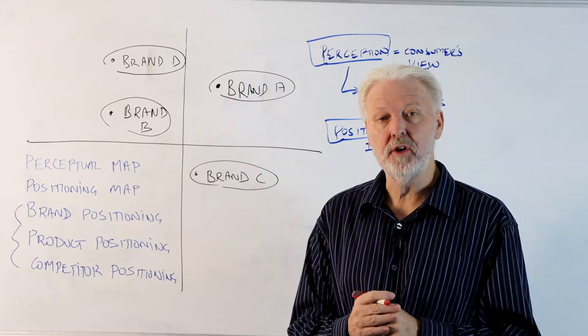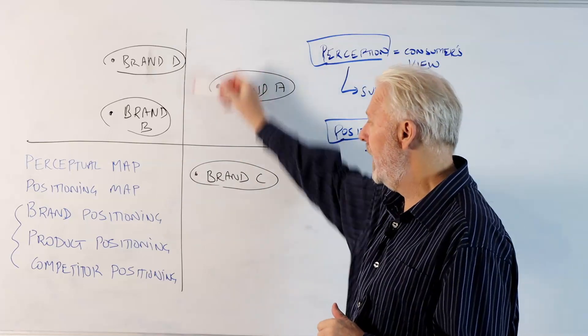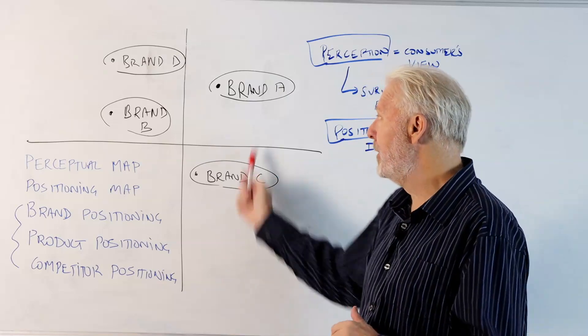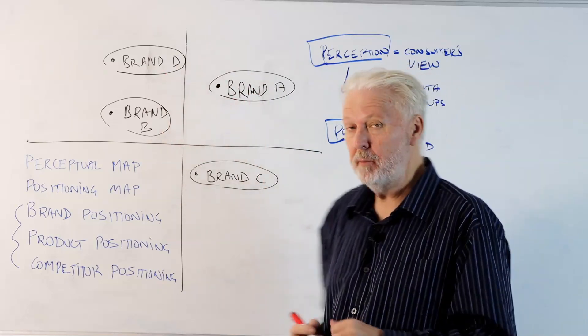No doubt you've seen these types of maps before where we have two attributes or two dimensions on a chart and we map competing brands as demonstrated there.